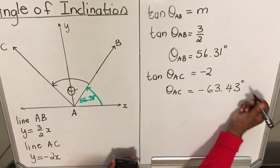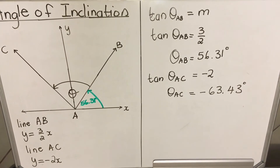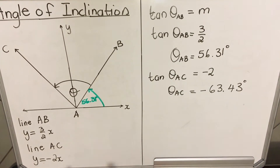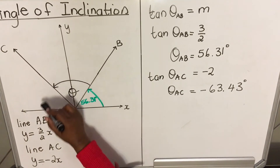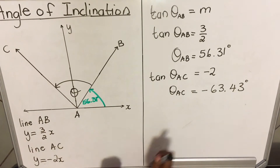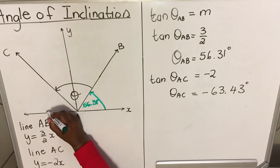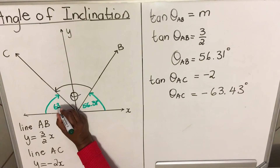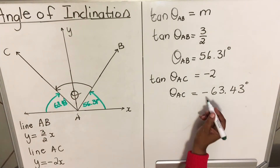Now, learners usually have confusion when they get a negative number — a negative angle. When you get a negative angle, it means it is going clockwise. When you calculate angles anti-clockwise, they are positive; when they go clockwise, it's negative. So that negative 63.43° is this angle here — it's 63.43° going clockwise.